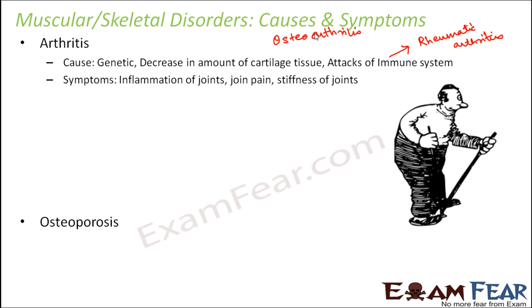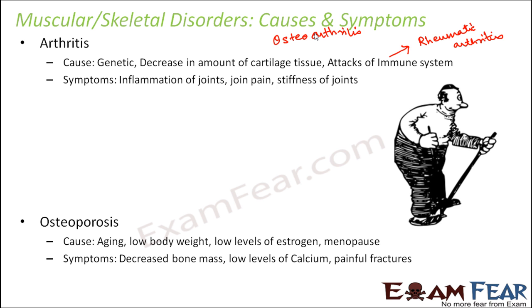Next is osteoporosis. This generally happens with increasing age, if body weight decreases or if the levels of hormones like estrogen decrease. It generally happens in females because females tend to have the hormone estrogen, and when the level of this hormone reduces it can lead to osteoporosis. The bone mass decreases due to lower levels of calcium in the body, making bones more susceptible to fractures which can be extremely painful. Osteoporosis can be avoided by intake of calcium, which is why females are always advised to continue calcium intake as they age.